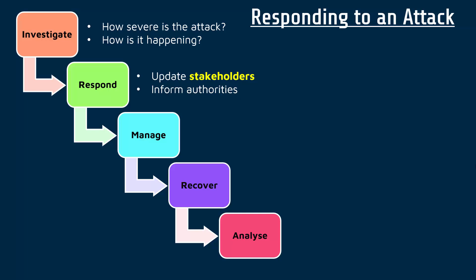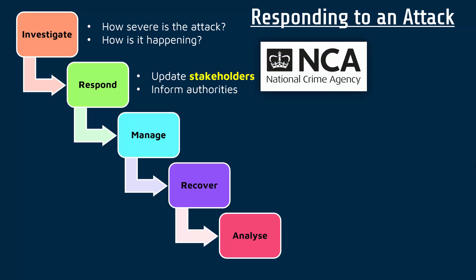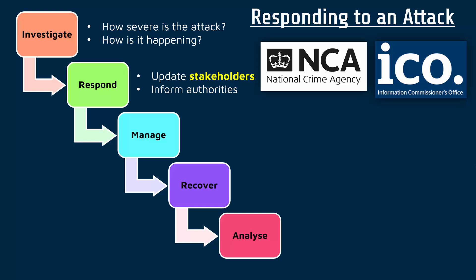A stakeholder is anyone who has an interest in what's going on. Maybe some data has been leaked and you need to find out who owns that data and inform them straight away. Maybe you've got some shareholders who need to know because it might affect their share price, or staff who are affected and likewise need to know. Separately, you must also inform authorities — you might want to inform the police, either your local police or the National Crime Agency, and in the UK you might also need to inform the Information Commissioner's Office, the ICO.